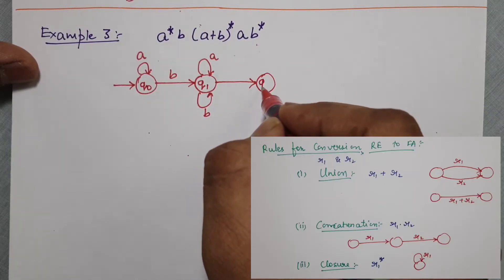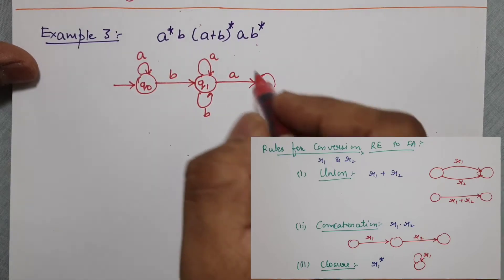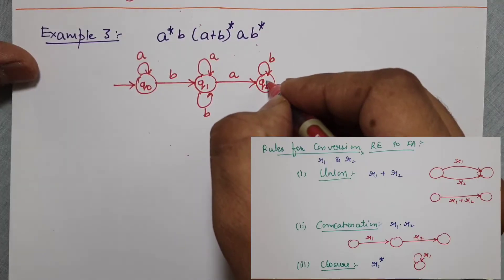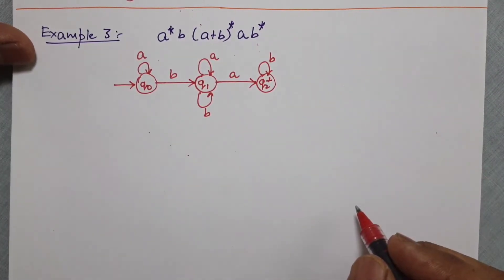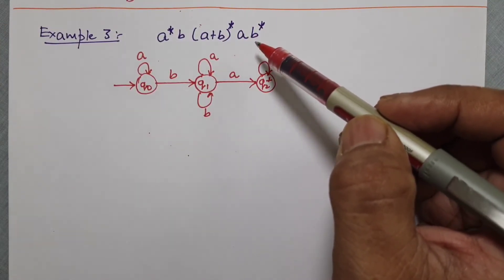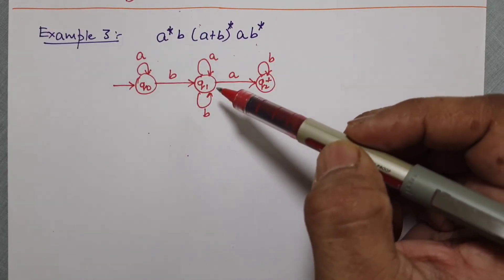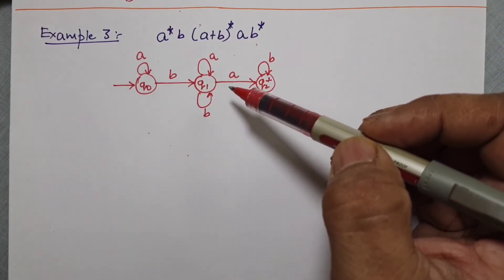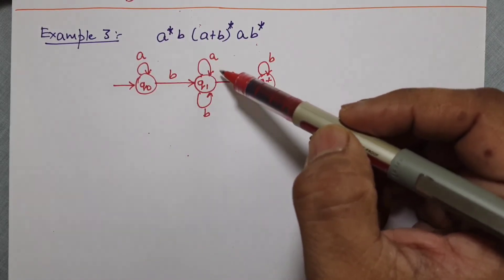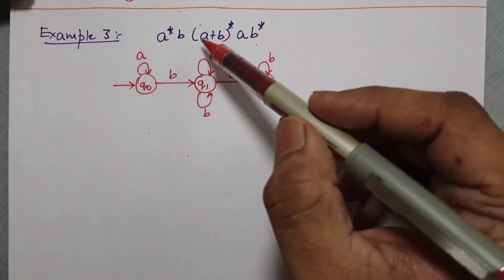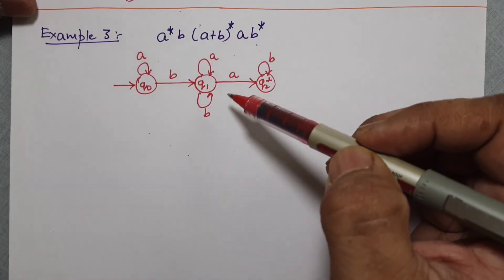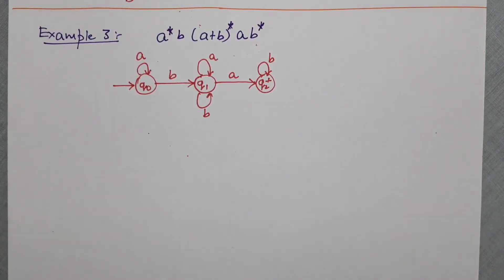Then this a will take me to another state, and then b*. Since b* is the last thing, this should be my final state. So a very difficult-looking regular expression has this simple automata — a very simple automata. This is non-deterministic; we can directly have a deterministic finite automata for this, but again that requires a huge amount of practice.